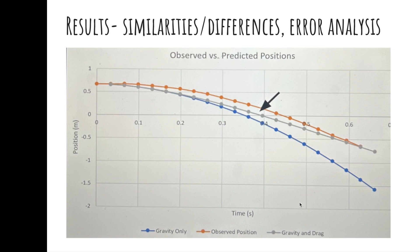Here is the data from the two computational models and the observed data on one graph. Notice how the computational model that included drag more closely models what we see in the real world. However, the middle of the graph does have some discrepancy.